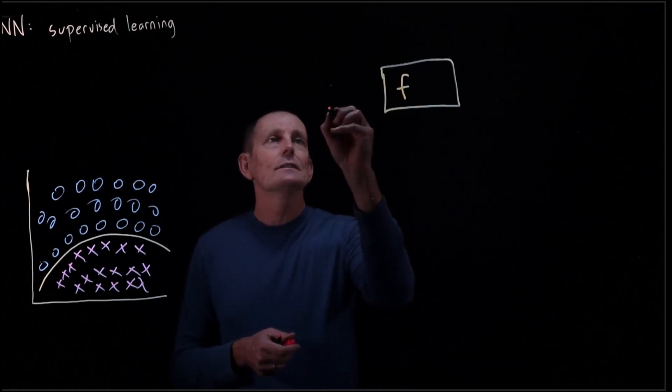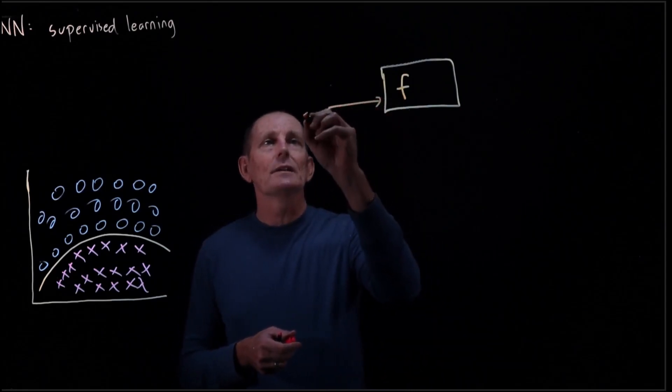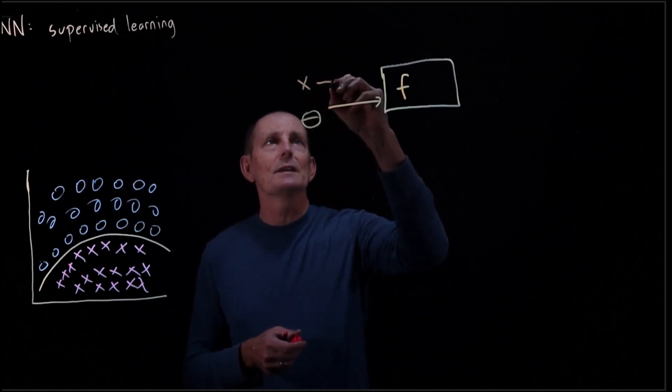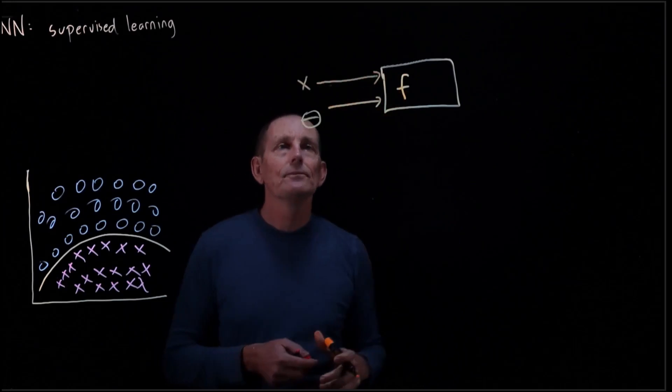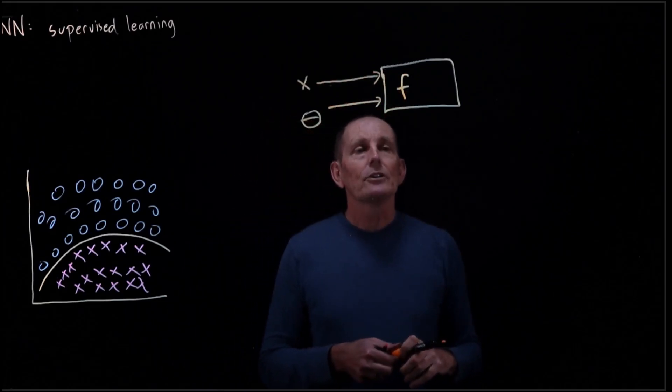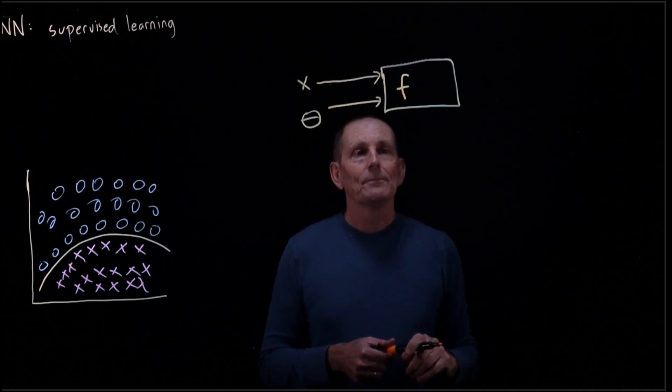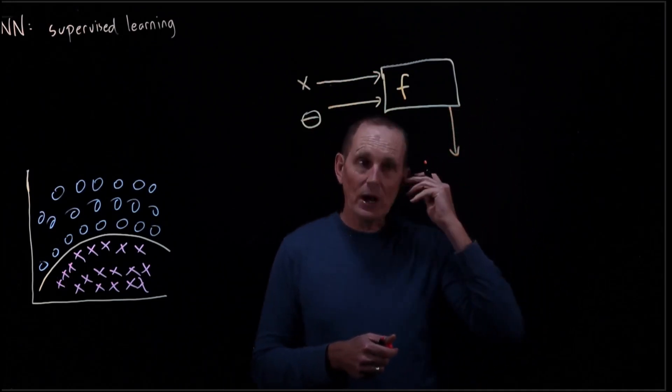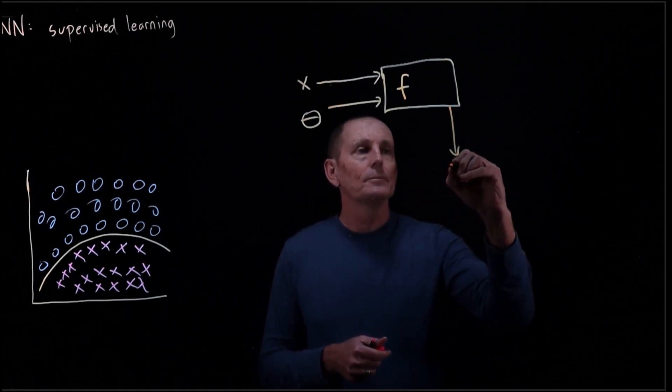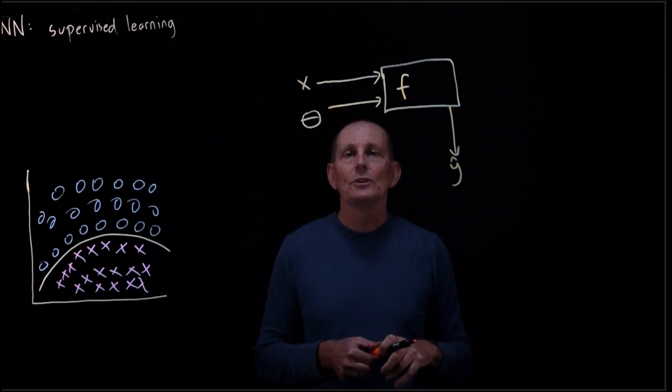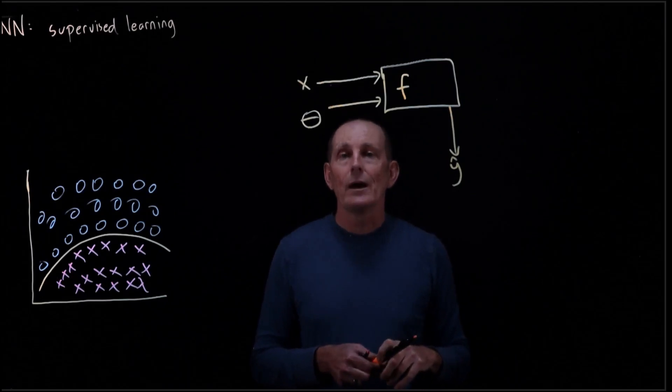It has theta coming in, and then we also have X coming in as input. The output of F we are going to call Y-hat. Y-hat to signify that it's an approximation to Y.